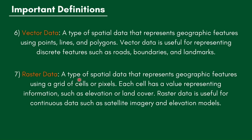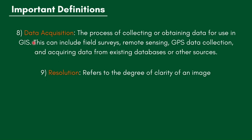Raster data is a type of spatial data that represents geographic features using a grid of cells or pixels. Each cell has a value representing information such as elevation or land cover. Raster data is useful for continuous data such as satellite imagery and elevation models. Data acquisition is the process of collecting or obtaining data for use in GIS, and can include field surveys, remote sensing, GPS data collection, and acquiring data from existing databases.